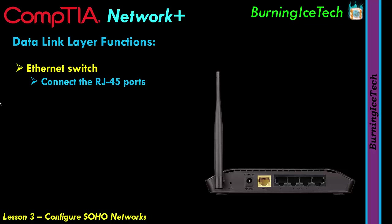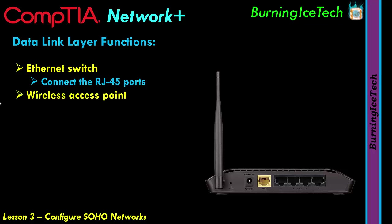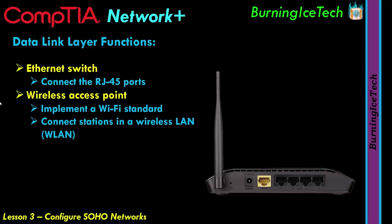Connectivity isn't limited to RJ45 ports — devices can also connect via wireless. One family member might be connected via cable and another via wireless, but they're still on the same network and can communicate through the device acting as a switch. The router also acts as a wireless access point. Most routers have at least one antenna — I've seen routers with two, three, even six antennas. It can implement a Wi-Fi standard and connect stations in a wireless LAN, which we call a WLAN.